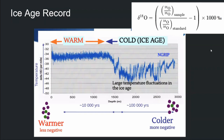What happens is, when we have a warm climate, it has more energy so it can evaporate and take more O18. The snow falling in a warmer climate is going to have more O18. Therefore, the value of delta O18 is going to be higher during warm periods of time. And inversely, it's going to be lower during cold periods of time, because you don't have as much energy to take O18 from the ocean.